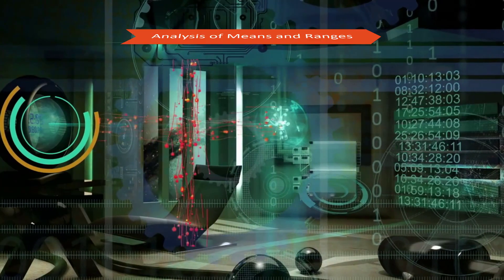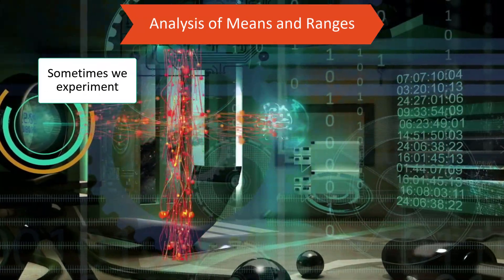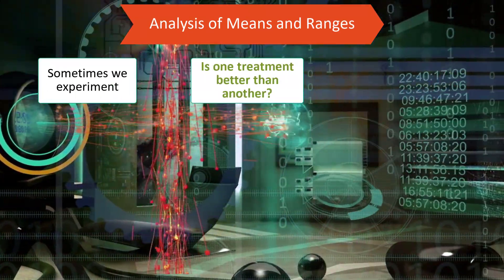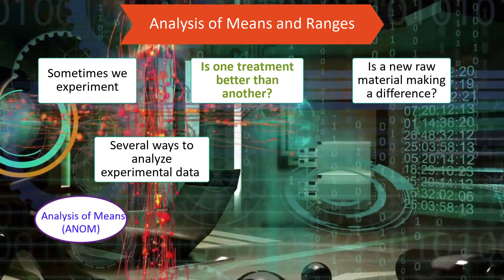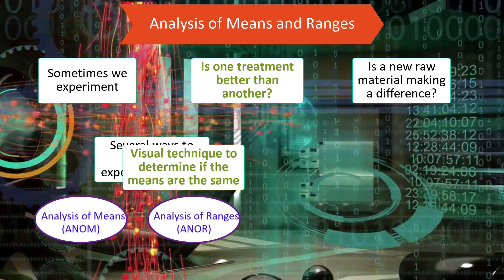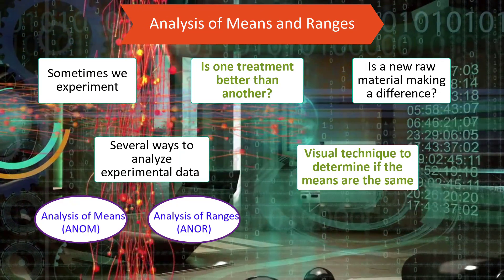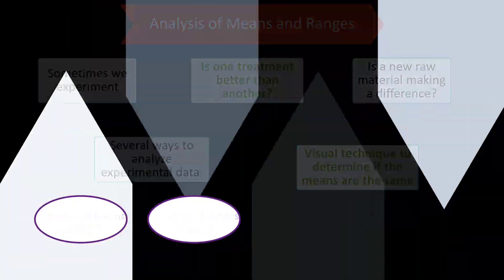This video is going to take a look at the analysis of means and ranges. We experiment sometimes. Is one treatment better than another? Is a new raw material making a difference? There are several ways to look at the data. We're going to look at the analysis of means and analysis of ranges. And this is a visual technique to determine if the means are the same or not.